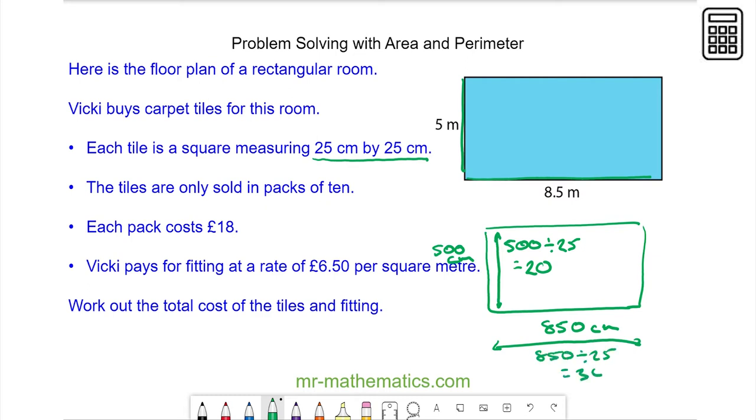Which is 34 tiles. So in total I've got 20 times 34, which means I need 680 tiles.